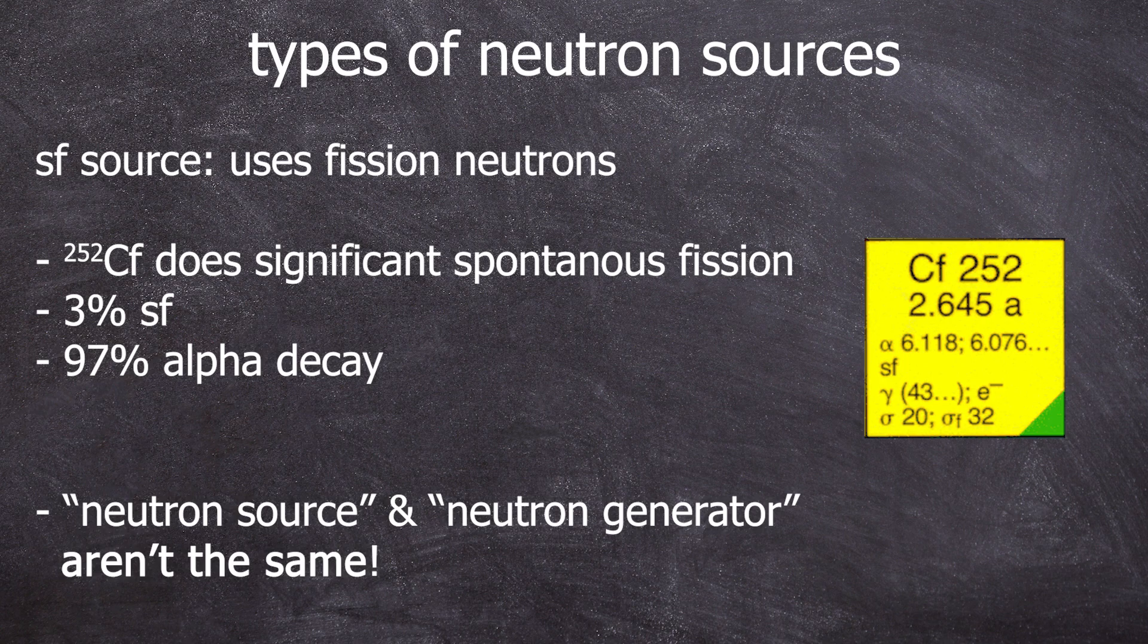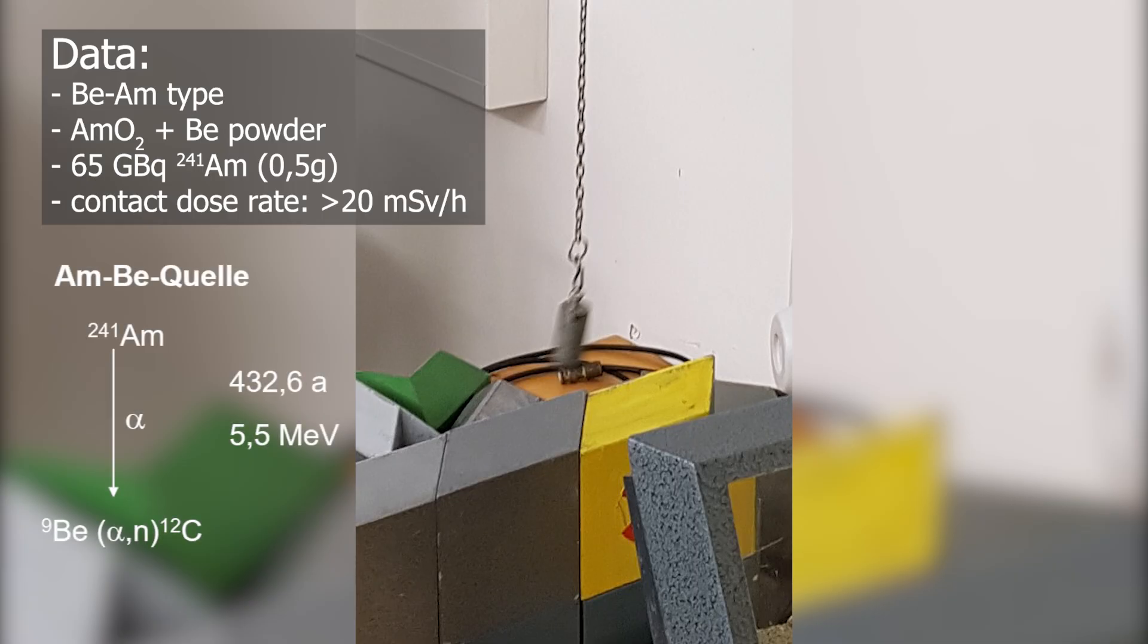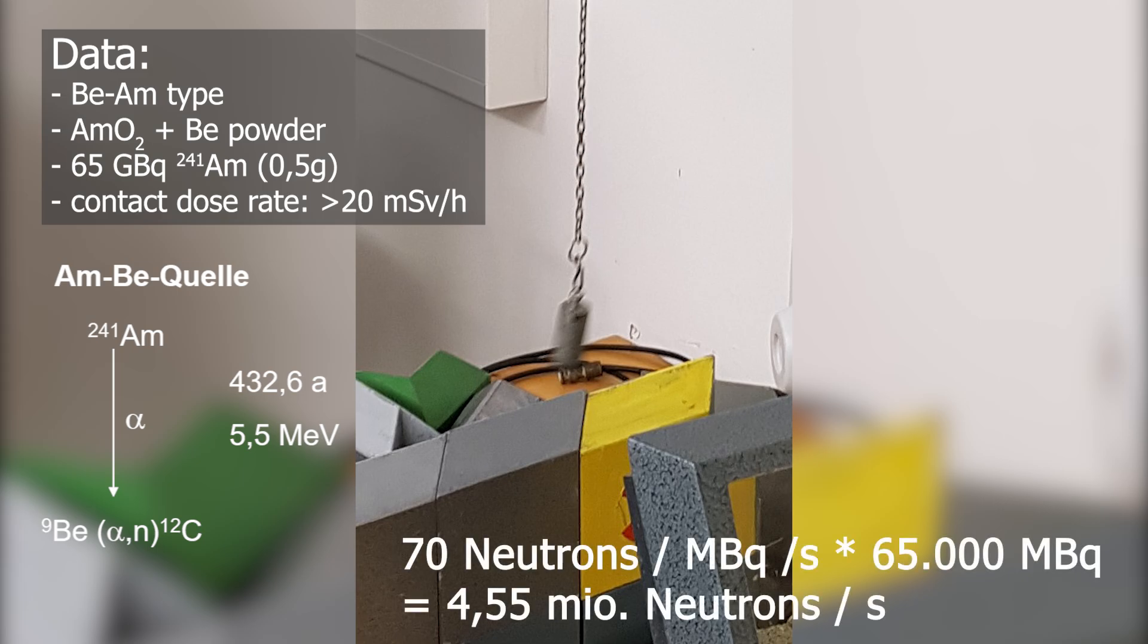Please do not confuse neutron sources with neutron generators, okay? So, how strong is the beryllium-americium source with 65 gigabecquerels of americium-241? You could calculate it. 70 times 65,000 megabecquerels is 4.55 million neutrons per second.